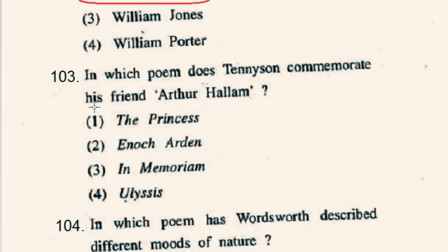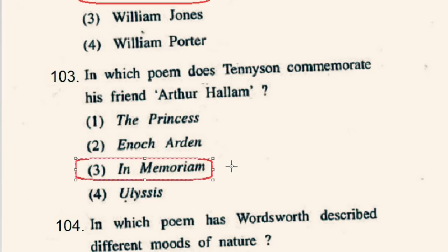Question number 103: In which poem does Tennyson commemorate his friend Arthur Hallam? Tennyson commemorates his friend Arthur Hallam in his poem In Memoriam. Arthur Hallam, the best friend of Tennyson, died suddenly in 1833. Hallam and Tennyson first met at Cambridge where they became members of the legendary intellectual club, the Apostles. Option 3rd, In Memoriam, will be correct.